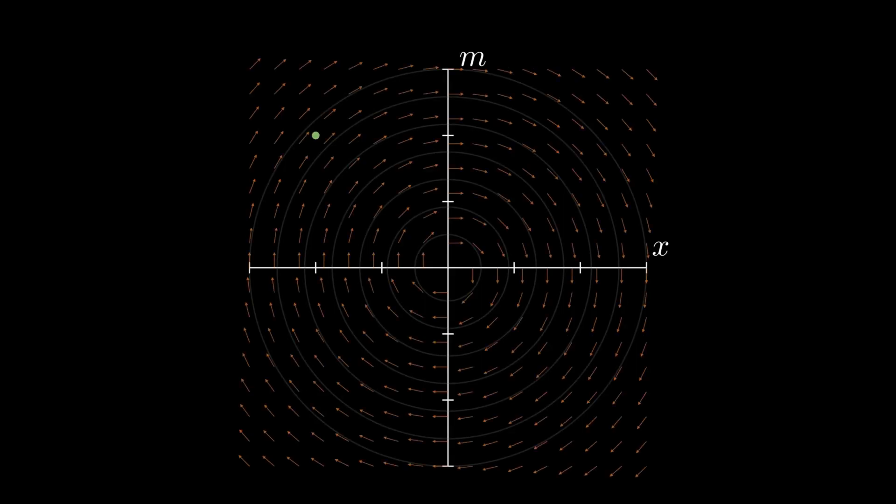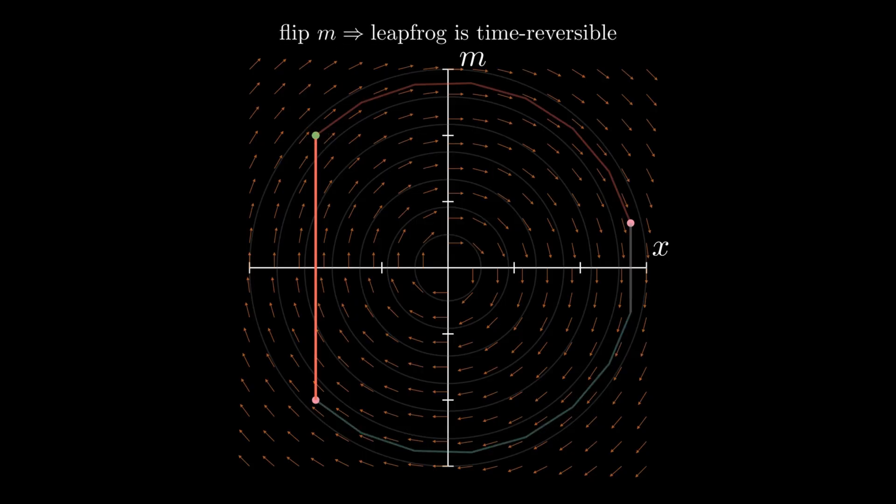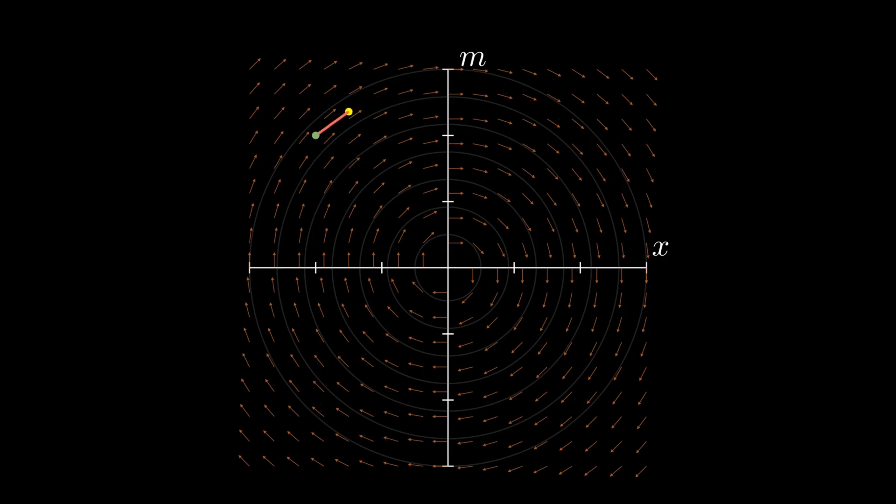Now I want to explain why we need the flipping of the m variable. If we do flip, we get that the process is reversible. Meaning, starting from the new point, we get to the old point. If we don't flip, we get that the process is not reversible, and we don't get from the new point to the old point.